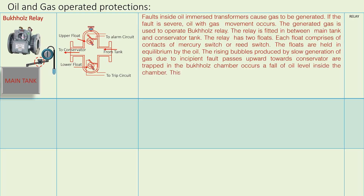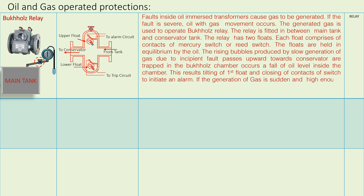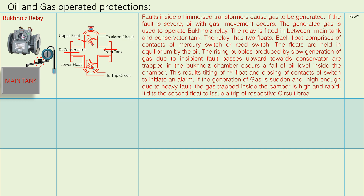This results in the tilting of the first float and closing of the switch contact to initiate an alarm. If the generation of gas is sudden and high enough due to a heavy fault, the gas trapped in the chamber is high and rapid, causing the second float to trip the respective circuit breaker of the transformer.